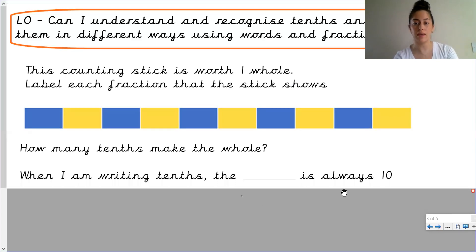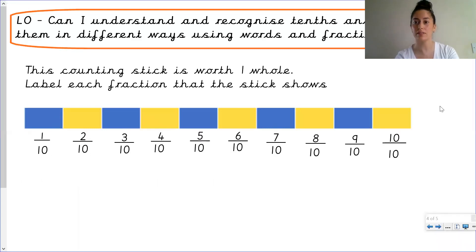When I am writing tenths, the something is always ten. When I'm writing tenths, does your numerator become ten or your denominator? Well, a whole is divided into ten equal parts. So my denominator is going to represent, is going to be ten. And I have written the tenths here as you should have on your piece of paper.